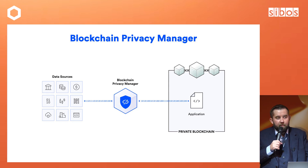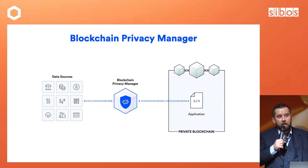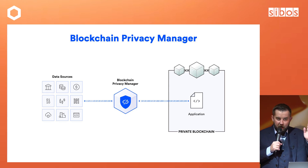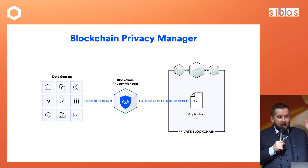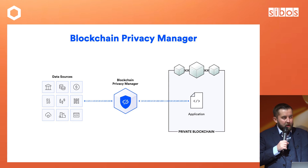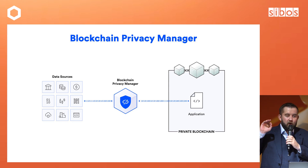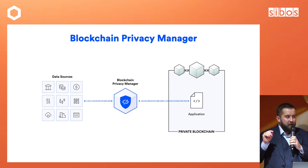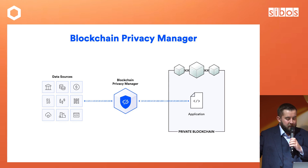The blockchain privacy manager basically creates a layer of protection between your chains and other chains, as well as between data systems and your chain. It is where you can configure what information flows into and out of your chain and what information goes between your chain and other chains.